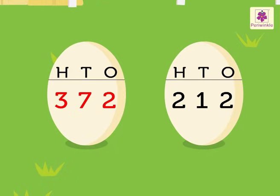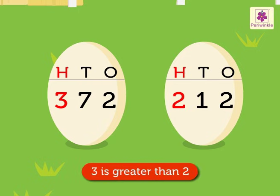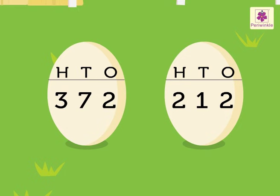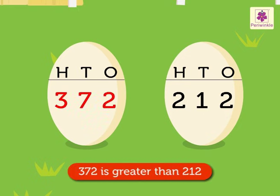Look at the numbers 372 and 212 on the eggs. We begin by comparing the digits in the hundreds place, that is 3 and 2. The digits are different here. 3 is greater than 2. So the number 372 is greater than the number 212.